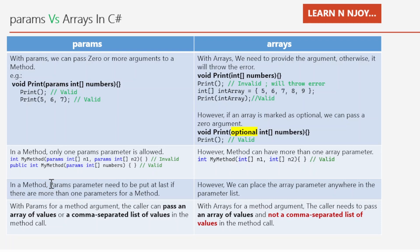Difference three: a params parameter must be placed last in the parameter list if there are more than one parameters. However, an array parameter can be placed anywhere in the parameter list — there is no restriction on position. Difference four: with params, the caller can pass either an array of values or a comma-separated list of values. With arrays, the caller must pass an array — a comma-separated list of values is not allowed.